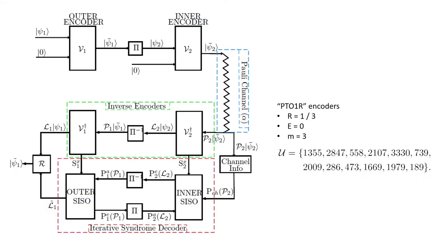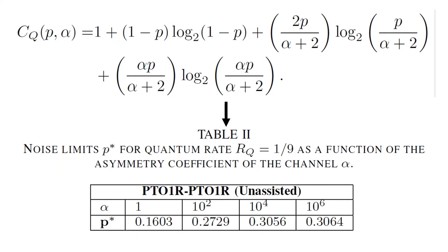This picture shows the schematic of the quantum turbo code used to assess the quality of the proposed estimation method. The convolutional encoders forming the turbo code are the PTO1 encoders from previous literature, with rate 1/3, no entanglement assistance, and memory-free operation. They are defined by the Clifford transformation U. Consequently, the turbo code has rate 1/9. The hashing bound for asymmetric Pauli channels is presented as a function of the asymmetry parameter alpha and the combination of error probabilities for each Pauli matrix, giving the noise limits used to assess the online estimation method.